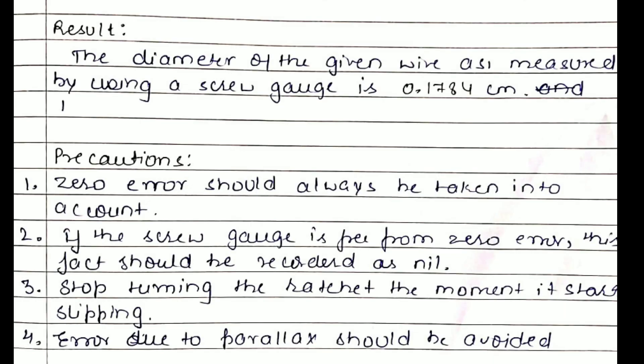Then you finally get the result, that is the mean diameter or you can say the corrected diameter is 0.1784 centimeter. Then come precautions. Precautions are most important as I have already mentioned in the earlier practicals.